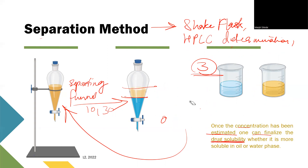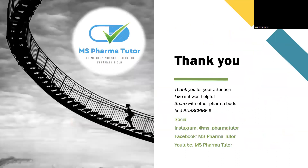To determine how much concentration is present in each phase, methods like titration can be used, as well as other analytical instruments like HPLC and UV. So if we have covered what partition coefficient is and the procedure for it, please like my channel if you're enjoying the videos, share with other pharmacy students, and don't forget to subscribe. I've also added my social media handles, so please click like. Thank you for watching.